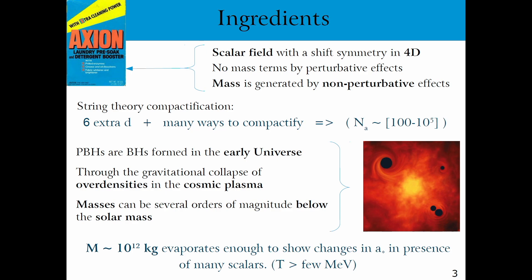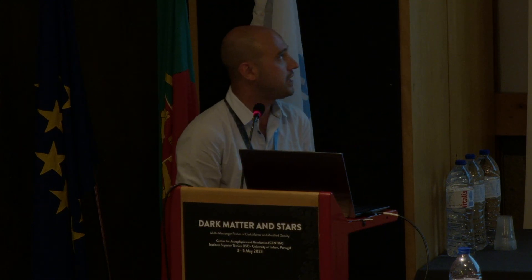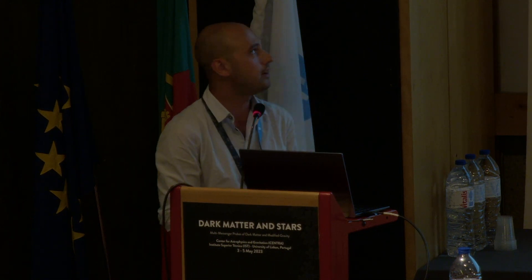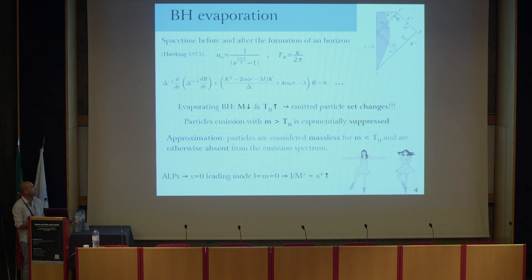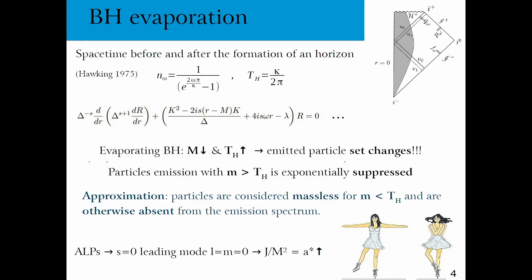As we know from the 70s, black holes are thought to evaporate with a nearly thermal emission. They evaporate, and their temperature is inversely proportional to the mass. So while they evaporate, their mass will shrink down, the temperature will rise, and they will be able to emit more and more massive particles. The emission of a particle with a mass smaller than the temperature of the black hole will be exponentially suppressed. So a good approximation is to consider a particle massless if its mass is smaller than the temperature of the black hole, otherwise absent from the evaporating sample.